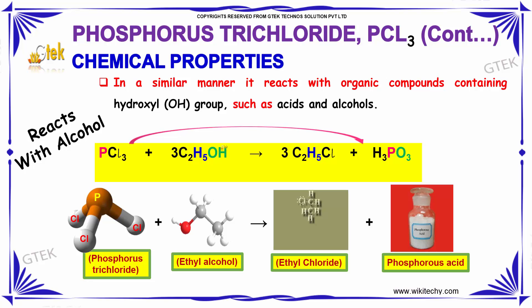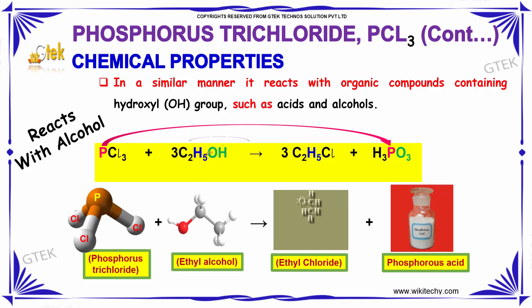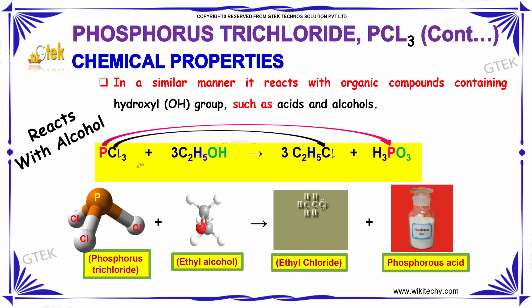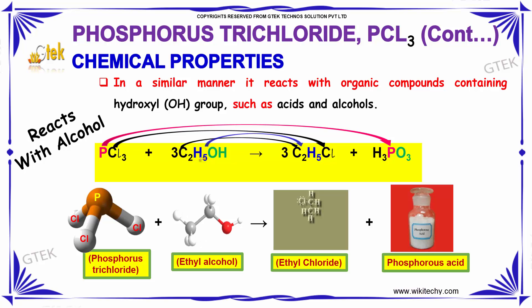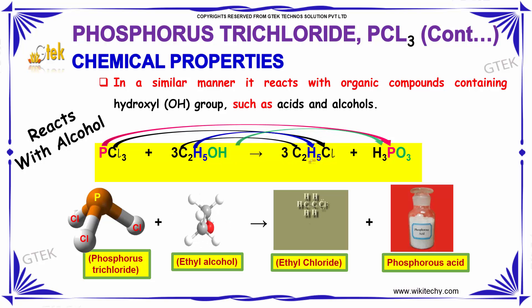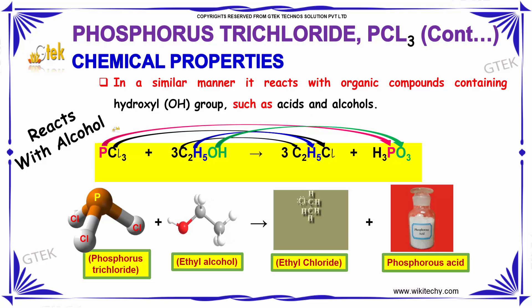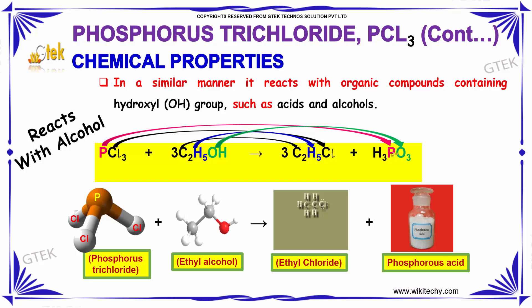When PCl₃ is mixed with ethyl alcohol (ethanol), it gives ethyl chloride and phosphorous acid. This is how it reacts, displacing the OH group.